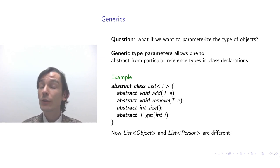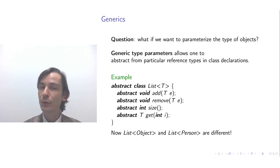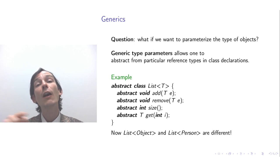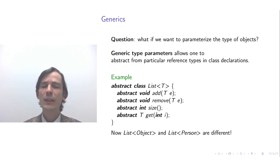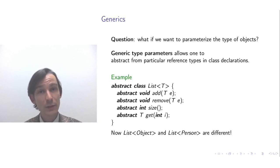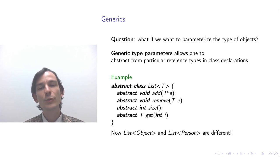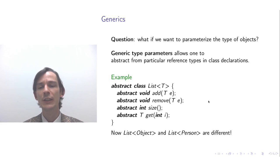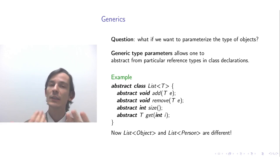A list of objects versus a list of persons gives different types. You could add a person to a list of objects since every person is an object, but when you get from a list of objects you get objects, not persons. If you also have a class car with no relation to person or animal, you can add a car to a list of objects. But in a list of persons you could not add a car, because car is not a person. Different actualizations of the type parameter give different types.